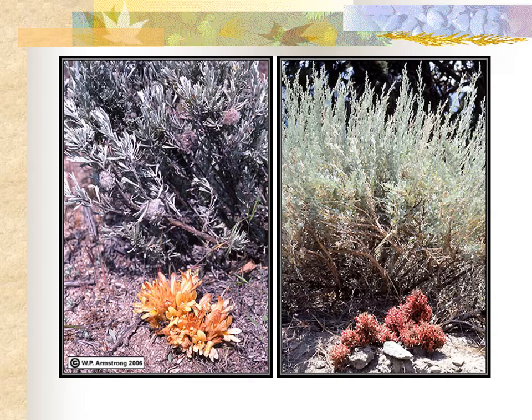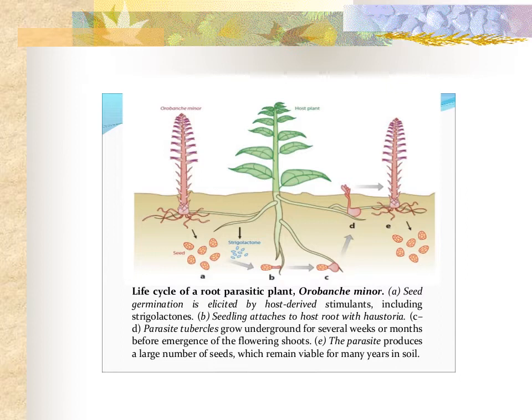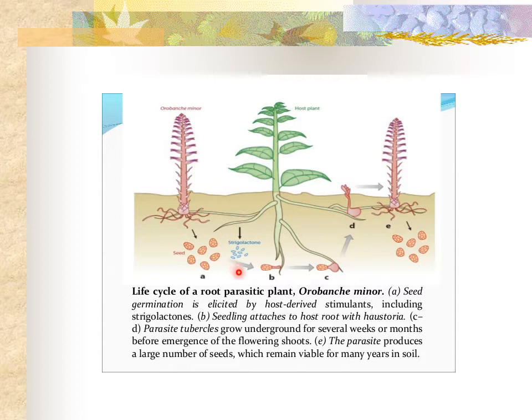Looking at the life cycle of a member of the Orobankaceae — here we have Orobanche minor, which has reached reproductive maturity and produced seed. These seeds can remain dormant in the soil for many years until they come in contact with a hormone called strigolactone, which is released from a host plant.